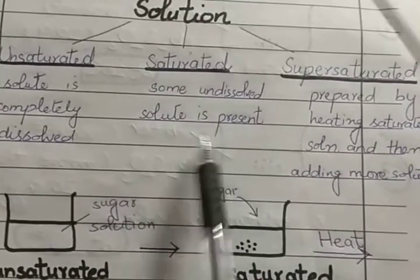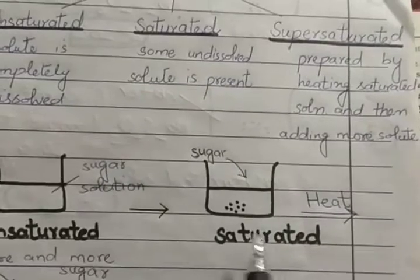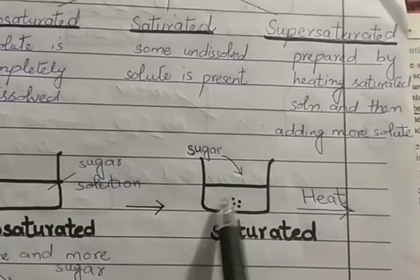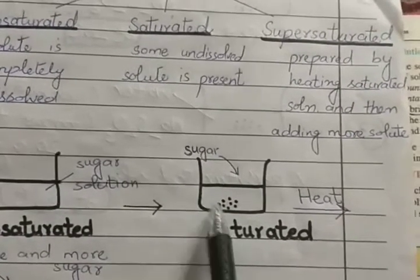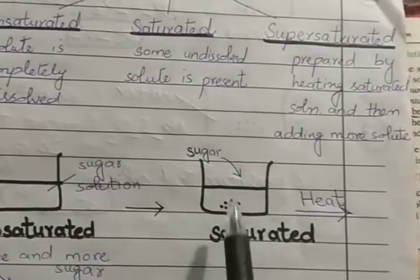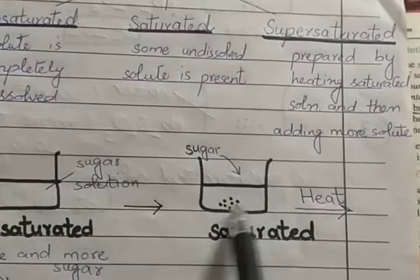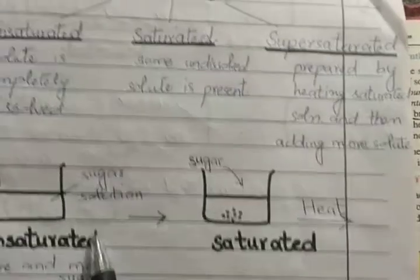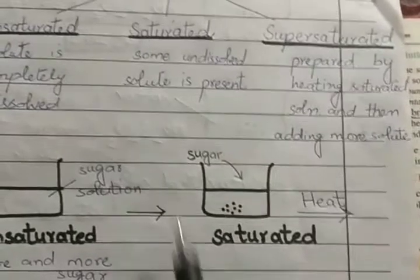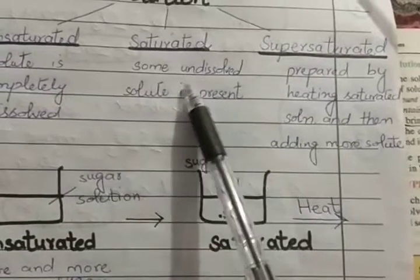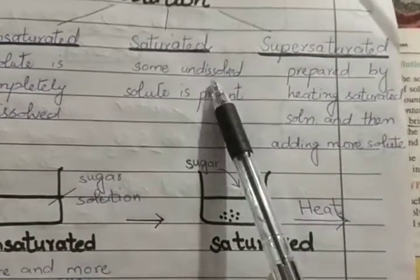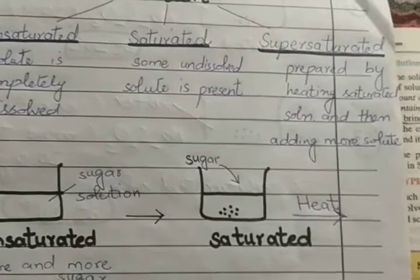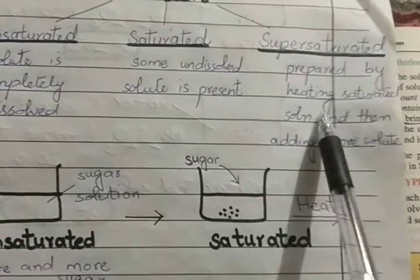A saturated solution is one in which some undissolved solute is present. For example, when sugar is dissolved in water up to a certain point, further added sugar remains in the form of crystals or precipitates at the bottom. We call this a saturated solution.